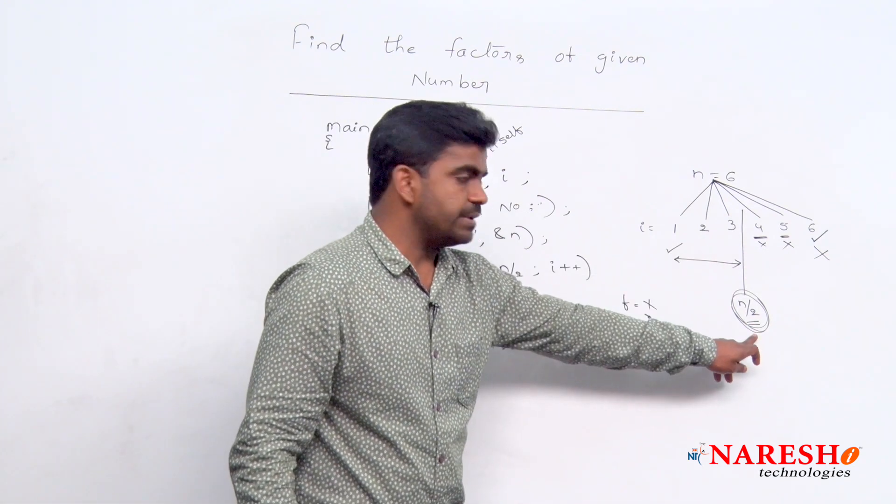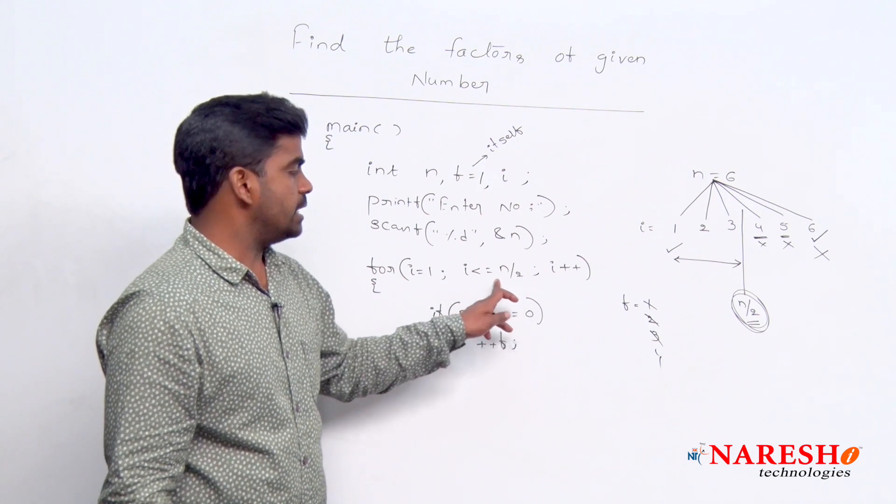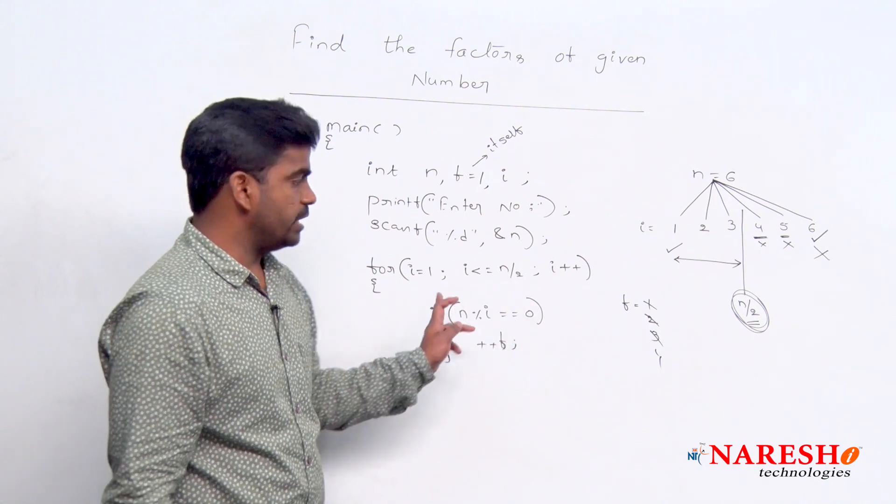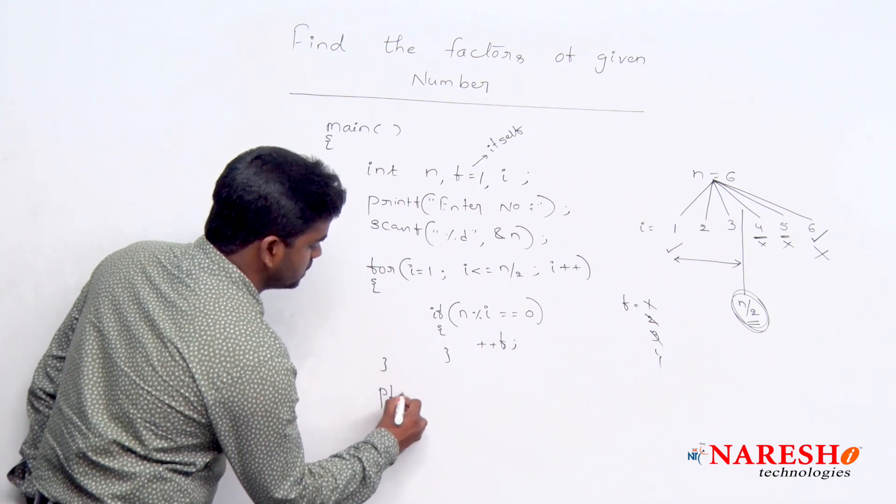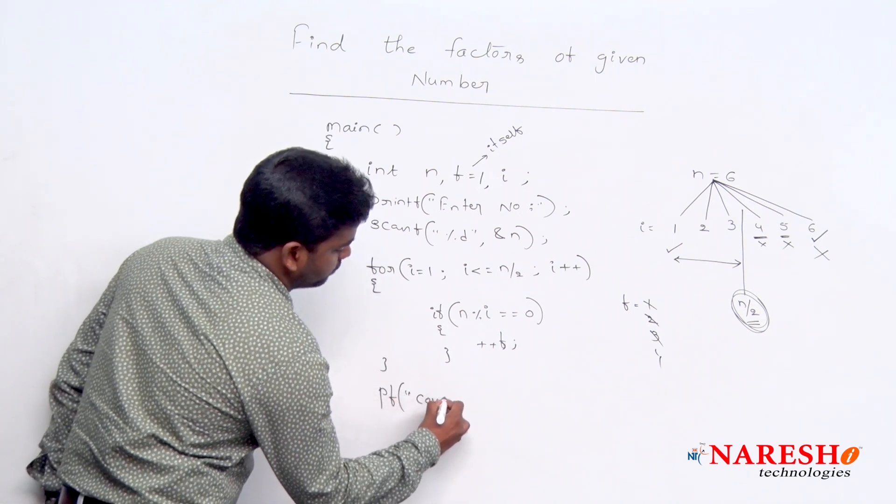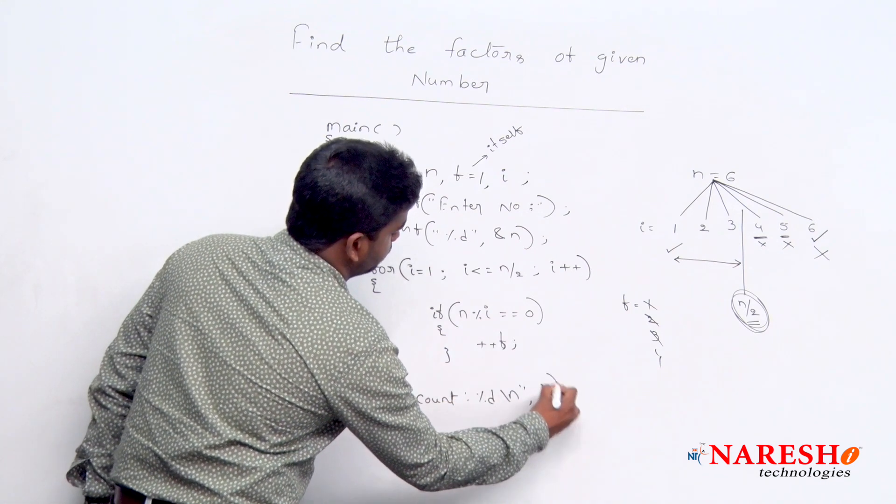Next one it will not check because whenever it reaches that n by 2, n value become 4, 4 is less than or equal to 3, condition false, it will be terminated. Directly here, just print f, the factor count percentage d, and just f we are printing.